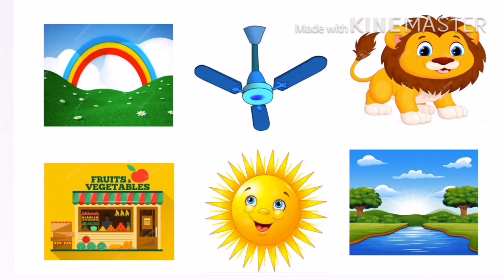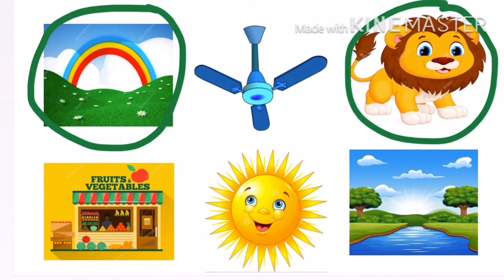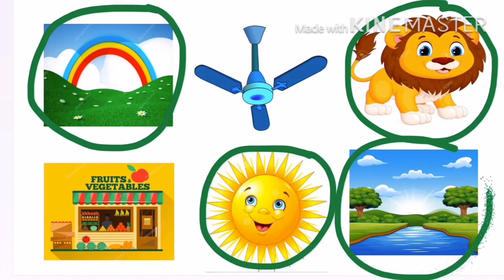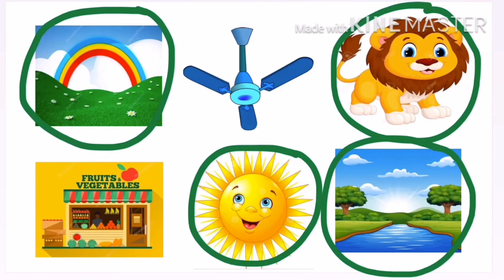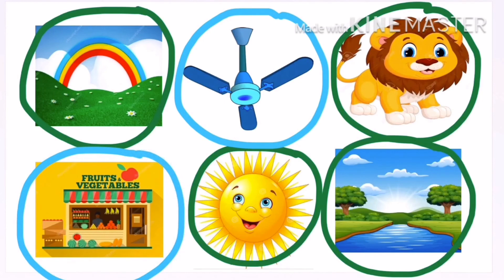Now let us look at these images and circle all the natural things green in colour. So the rainbow, the lion, the sun and the river are natural things — we have circled them using green colour. Now let us circle the man-made things using blue colour. The fan and the shop are man-made things. So here we have circled all the natural things using green colour and all the man-made things using blue colour.